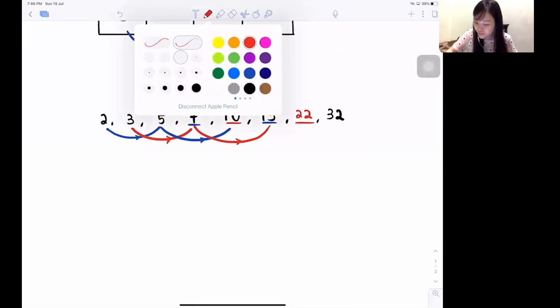5 plus 10 is 15. 7 plus 15 is 22. If you're not too sure, you can continue check. 10, 10 plus 22 is 32, exactly. Wow! So this answer here is 22.